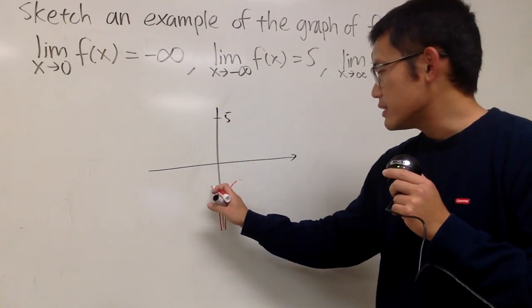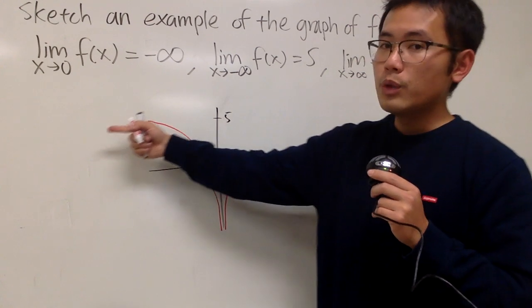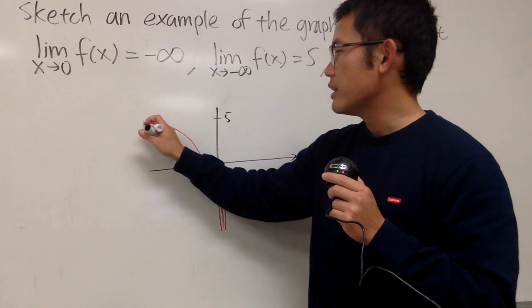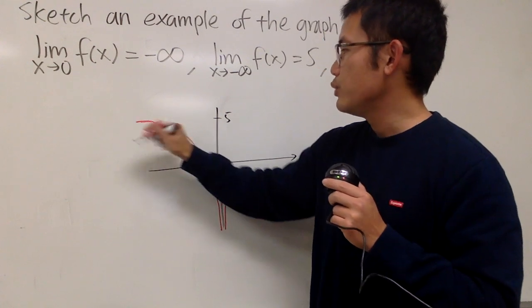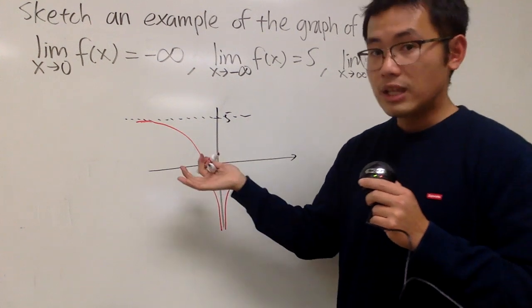In that case, we'll just extend it so when x is going all the way toward the left, this is going to be flat, and you end up with a horizontal asymptote like this. That's pretty much the idea.